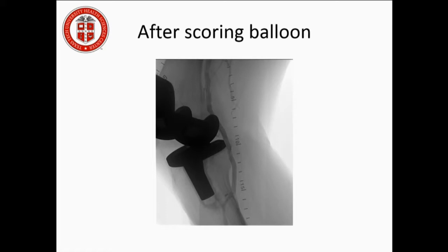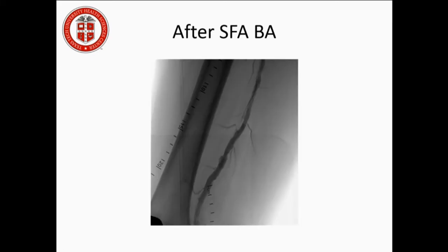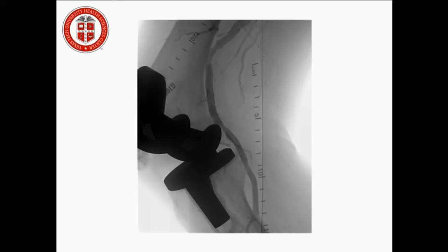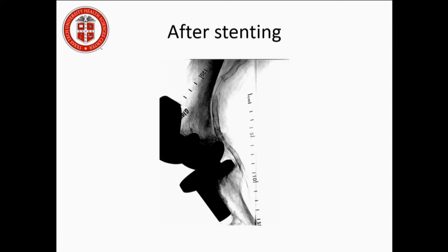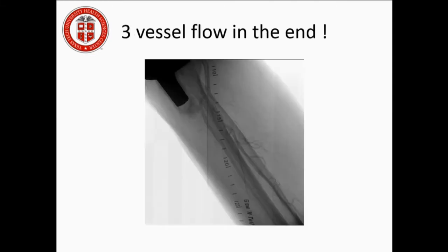We started the scoring balloon and deployed the Supera stent in the popliteal. After balloon angioplasty of the superficial femoral artery, we deployed the LifeStent in the distal superficial femoral artery. Then after multiple balloon angioplasties, we couldn't get good flow into the anterior tibial, and a decision was made to proceed with a bioresorbable vascular scaffold in the anterior tibial. We have three-vessel flow at the end after all three vessels were treated.